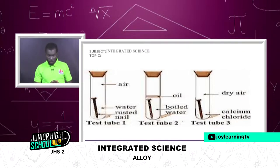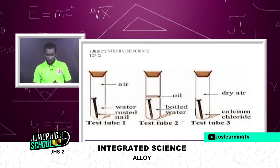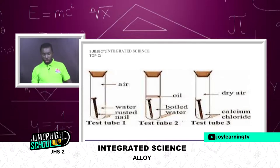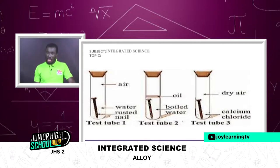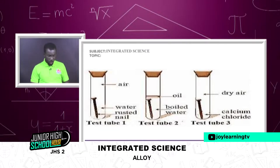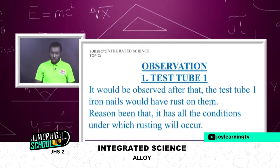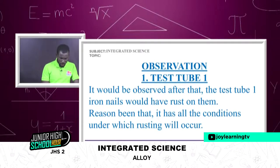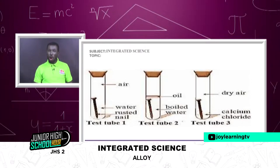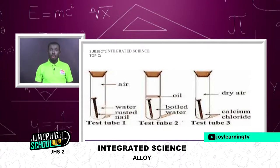After three days, what will be our observation? In test tube one, the iron nails would have rust on them. Why? Because all the conditions necessary for rusting are present: we have iron, we have water as moisture, and we have air. So test tube one will definitely show rusting.